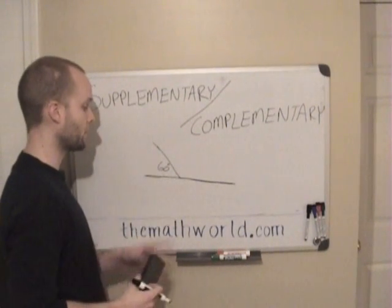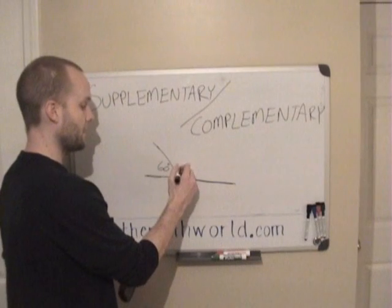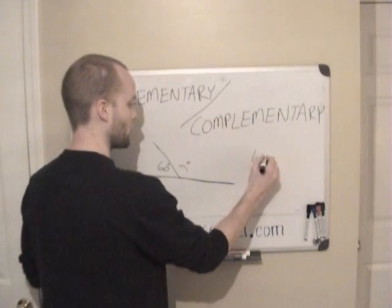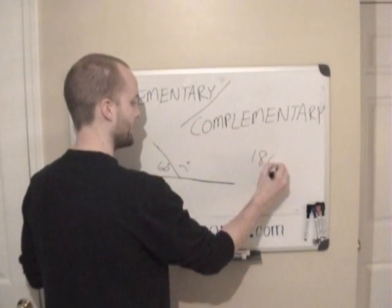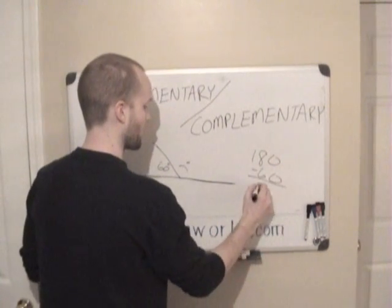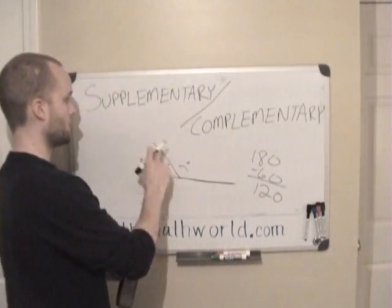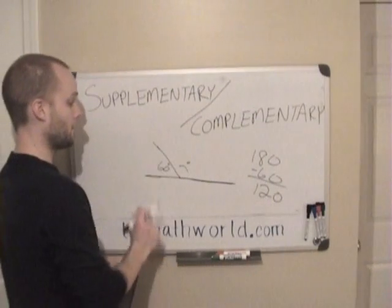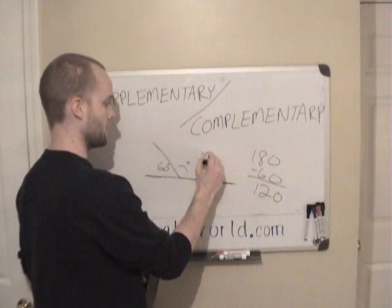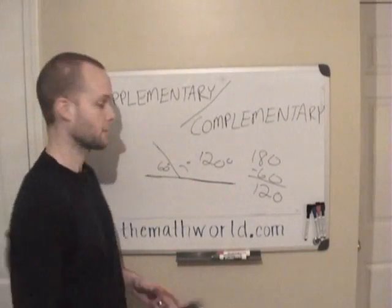So in this example, if we're given 60 degrees, then to find this other angle right here, we're going to take 180 and subtract 60, and we're left with 120. So the supplementary angle of this is 120 degrees.